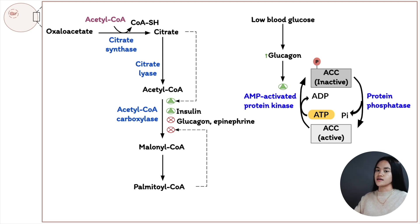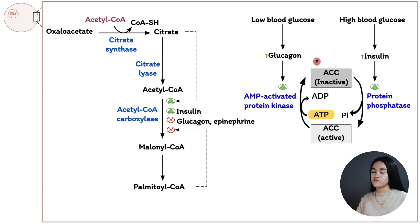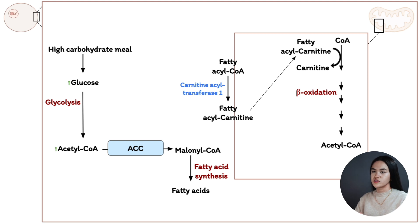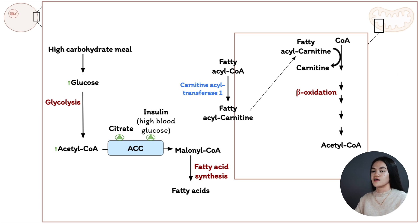On the other hand, when blood glucose is high, insulin is secreted. Insulin activates insulin-dependent protein phosphatase, which dephosphorylates ACC — removing the phosphate group and activating acetyl-CoA carboxylase. This active ACC then catalyzes the reaction converting acetyl-CoA to malonyl-CoA, leading to fatty acid synthesis. Meanwhile, palmitate — the end product — inhibits acetyl-CoA carboxylase, slowing down malonyl-CoA production.